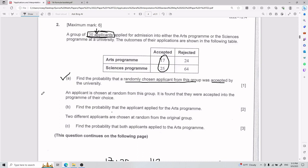Then it gets a little weird. They tell us that an applicant is chosen at random from this group, and it is found that they were accepted into the program of their choice. So for part B, we need to find the probability that the applicant applied for the arts program. Now, the hardest part about probability is thinking how to approach the problem.